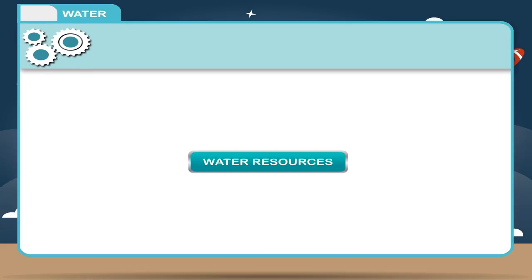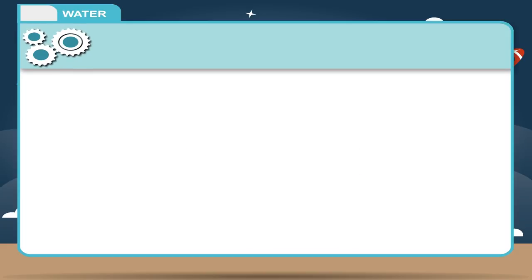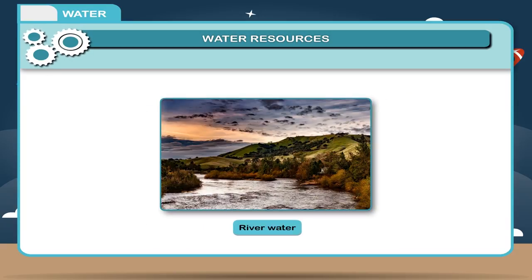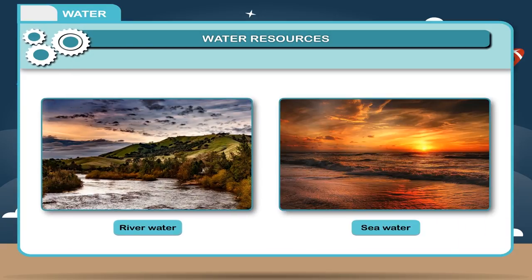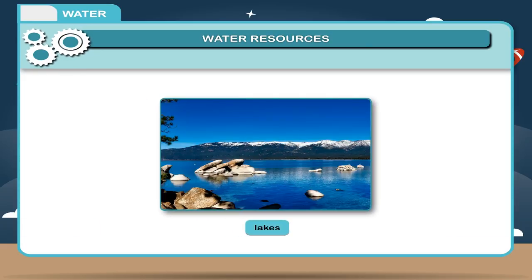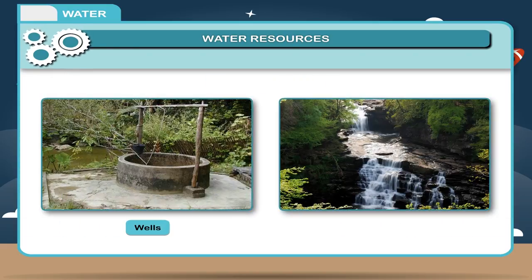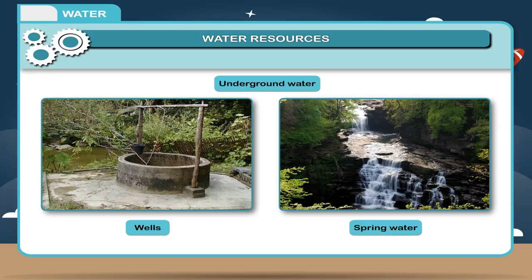Water sources are found underground and on the surface. River water, sea water, lakes, ponds, etc. are sources of surface water, while wells and spring water are sources of underground water.